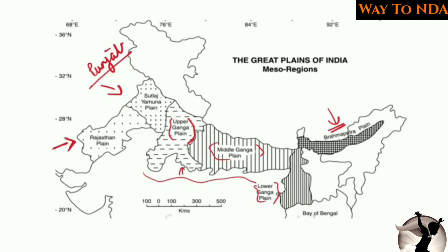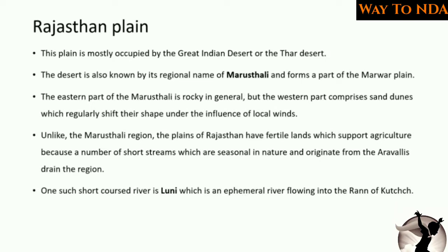The Rajasthan Plain is mainly covered by the Great Indian Desert, also called as Thar Desert, and in the regional language this desert is also called as Marusthali. The western part of the Marusthali has sand dunes and the eastern part has rocky structures. The other region apart from the Marusthali is very cultivable and supports agriculture.